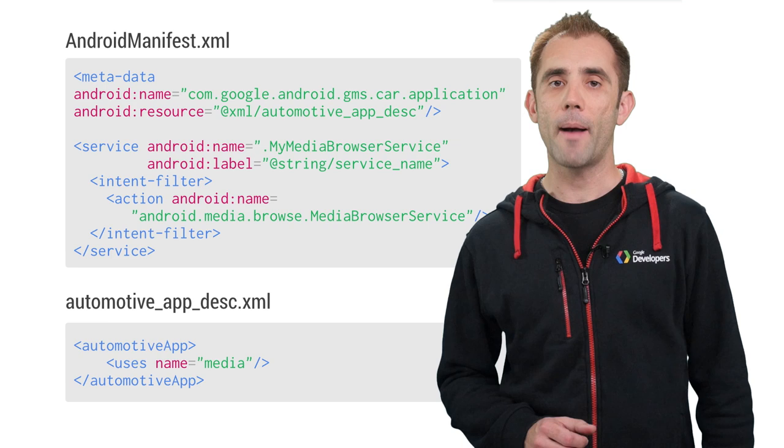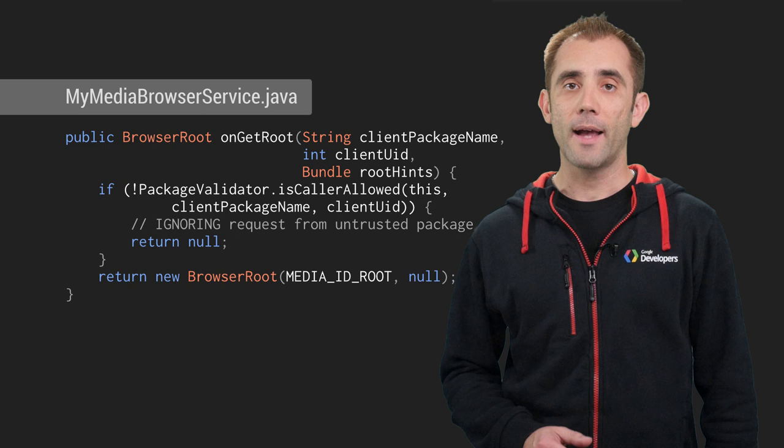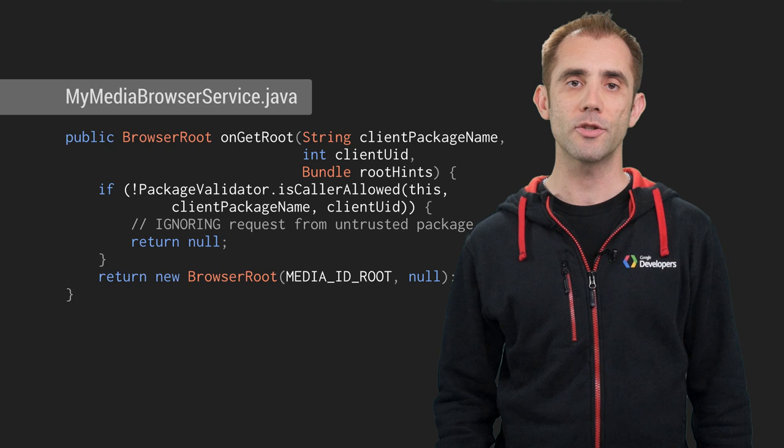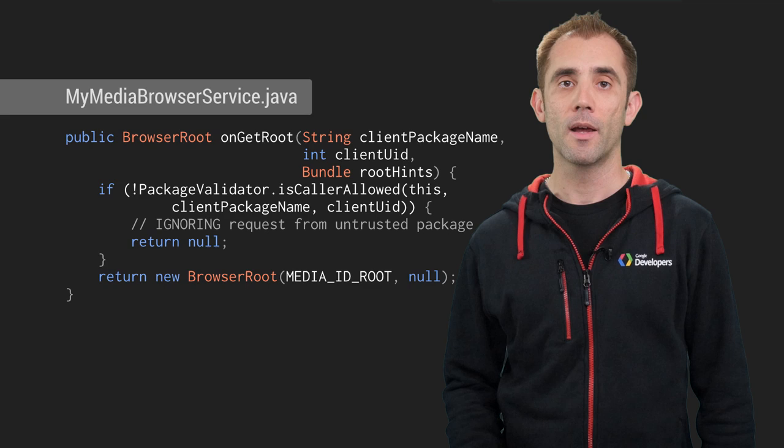You also need to declare a media browser service which tells Android Auto that your application is able to expose information about available media. Next you need to implement the media browser service. First you implement the onGetRoot method which returns the top level node of the media hierarchy and it's not shown in the UI. This is where you should also implement checks to prevent anything except Android Auto from querying your application by checking that the incoming client package name matches the Android Auto package name.